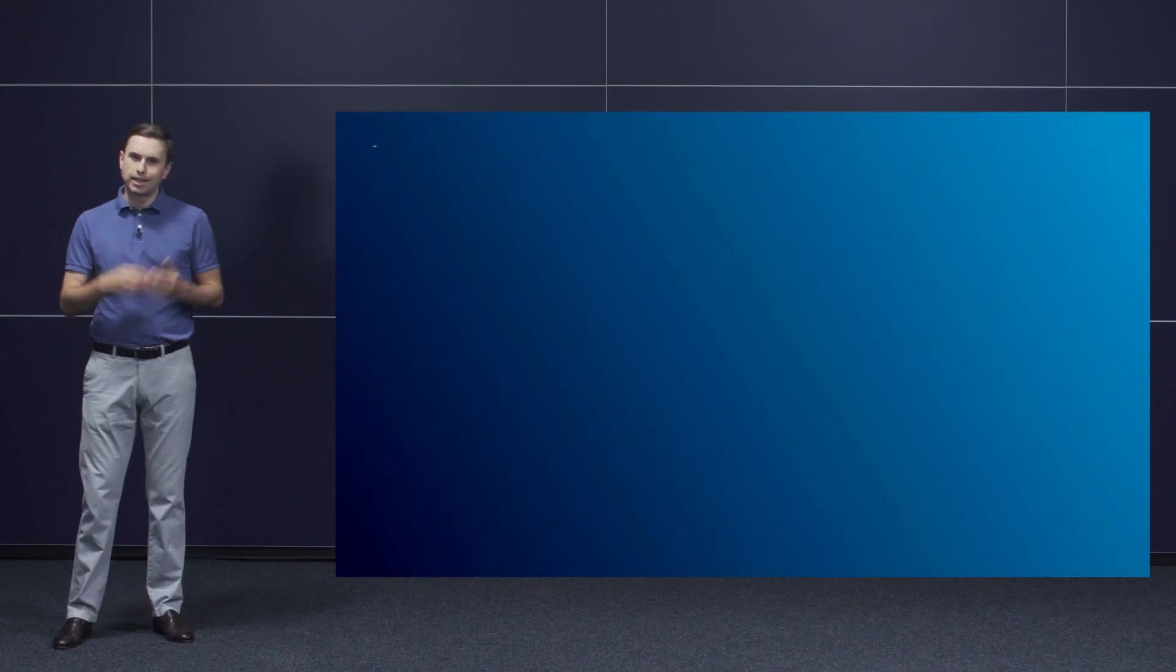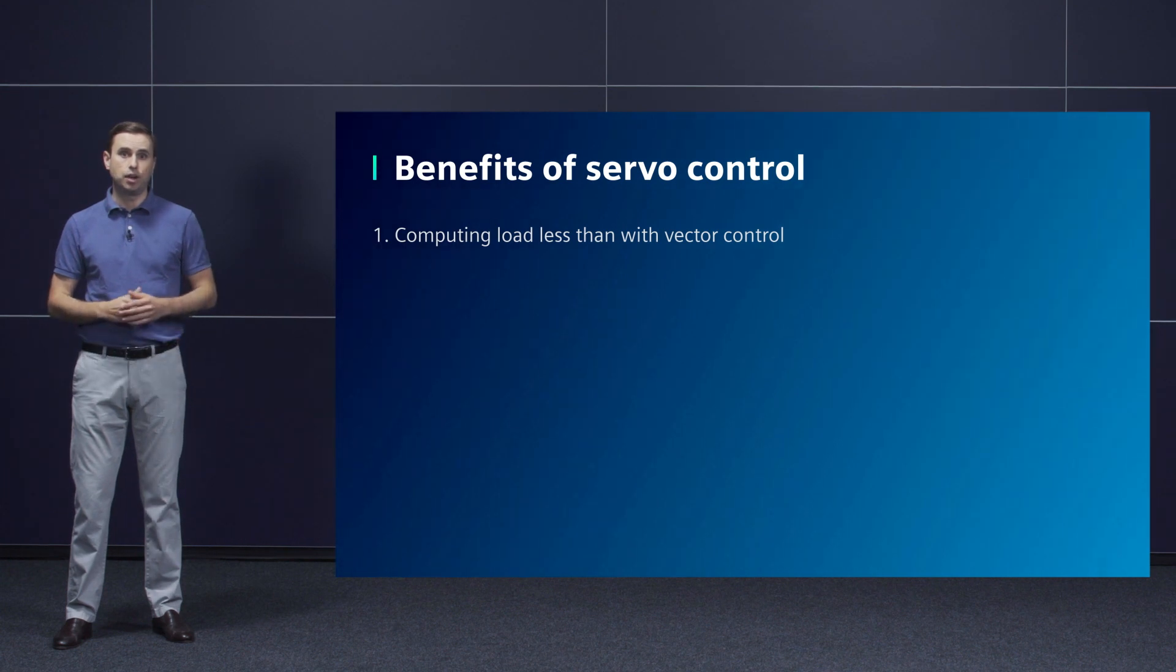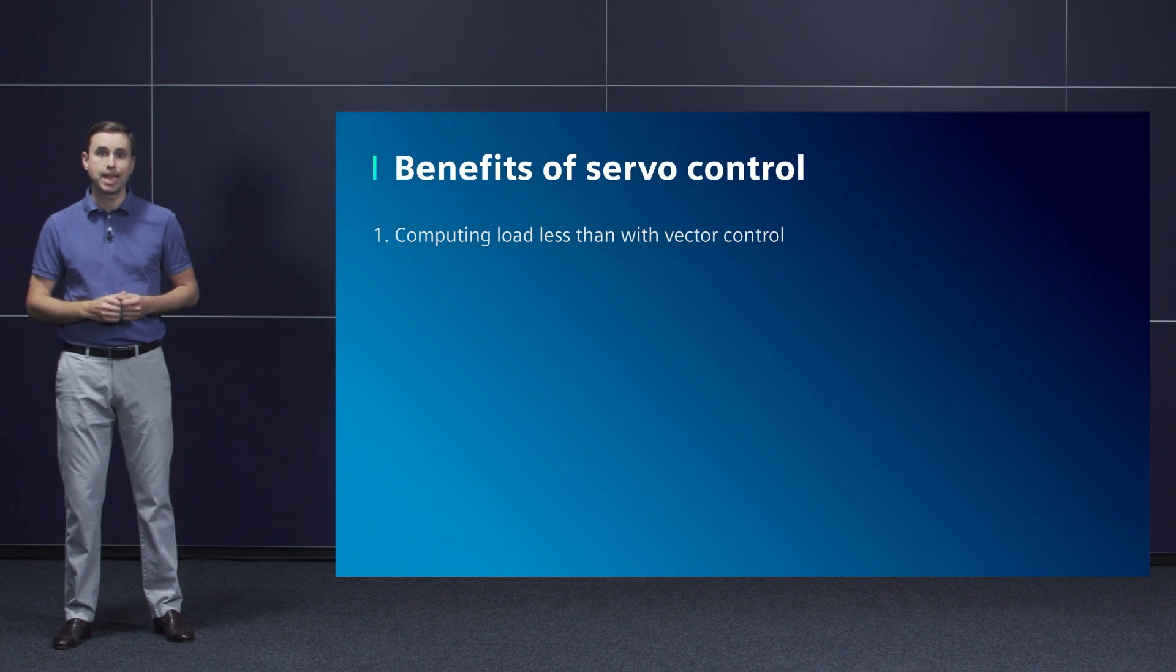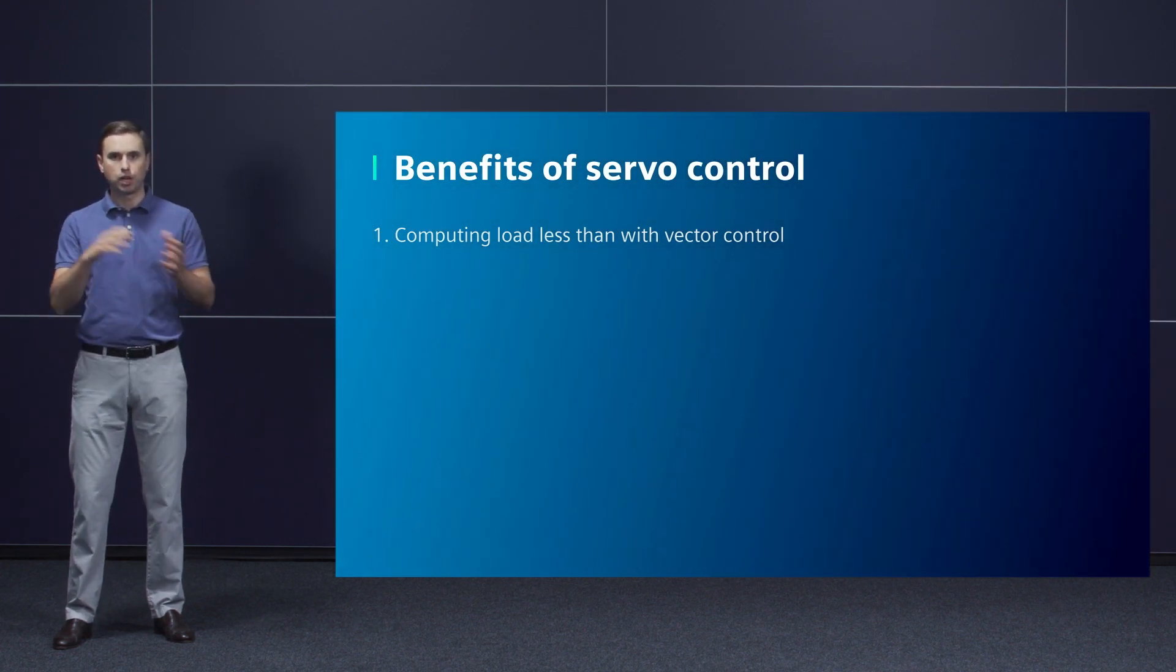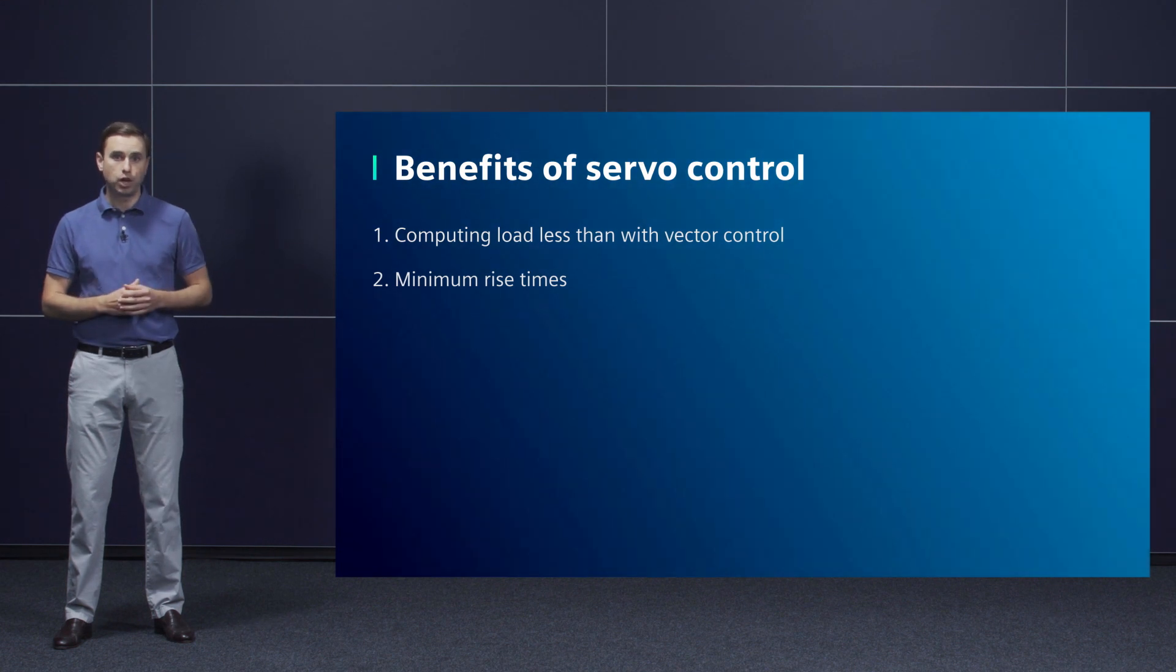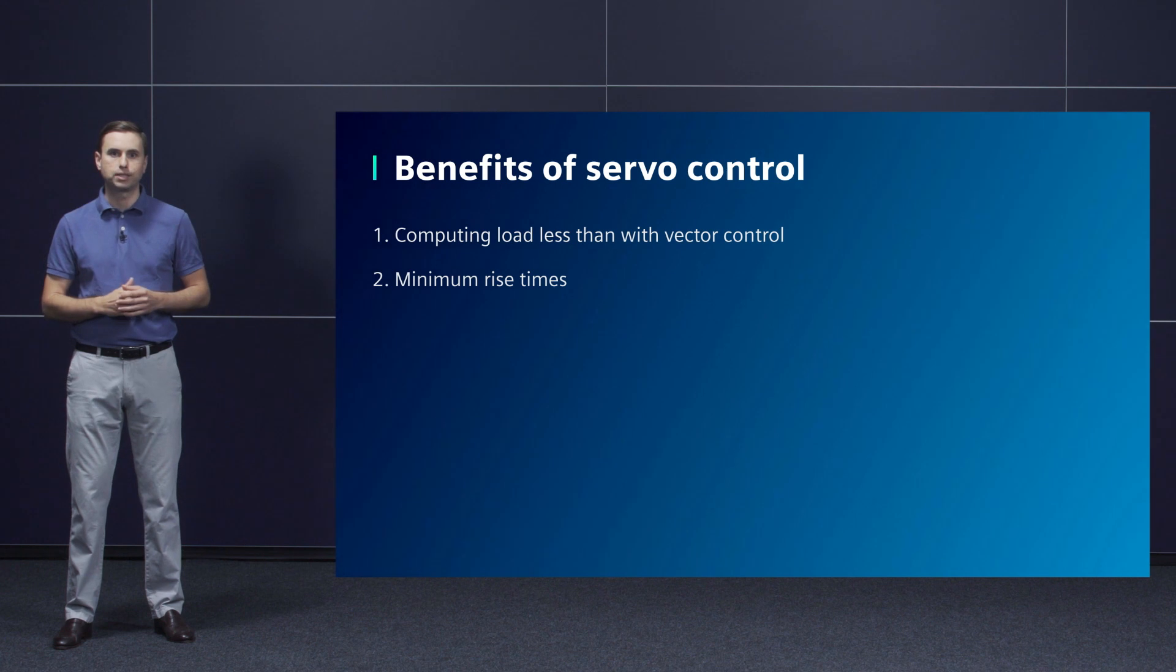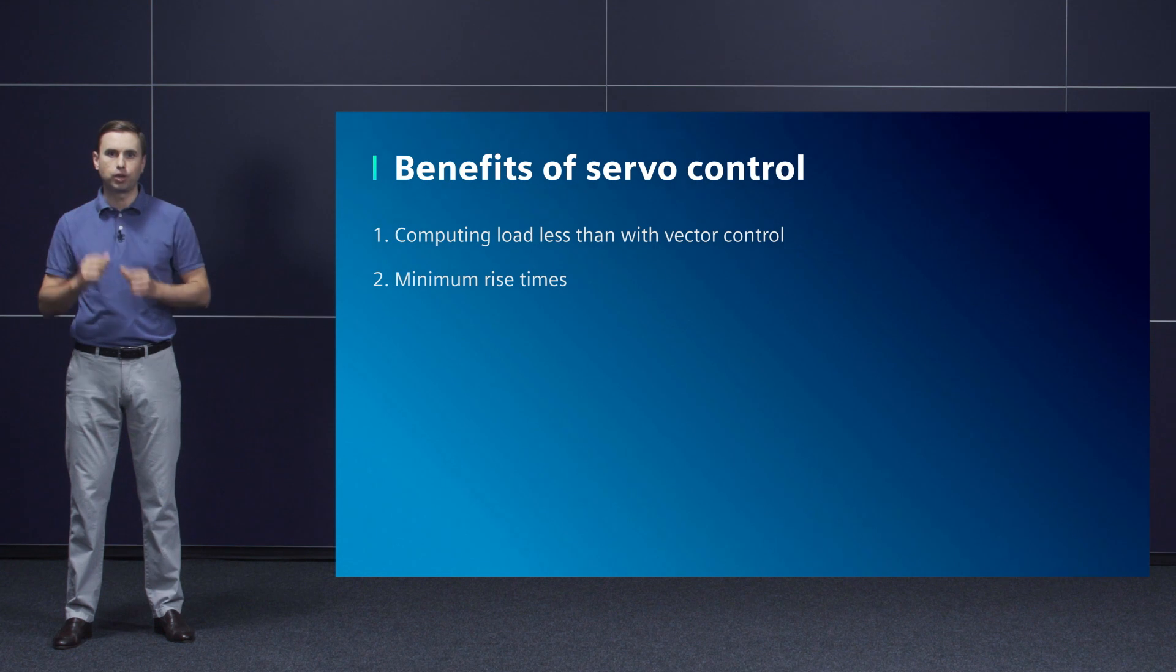What are the specific features of servo control? Servo control offers, firstly, a lower computational load, which means that, for example, more axes can be calculated in the multi-axis system of the Sinamics S120, 6 in servo compared to 3 in vector mode. Secondly, the shortest possible response times. For instance, the Sinamics S210 servo drive in combination with the Simotics 1FK2 motor can accelerate to 6,000 RPM in just 3 milliseconds.